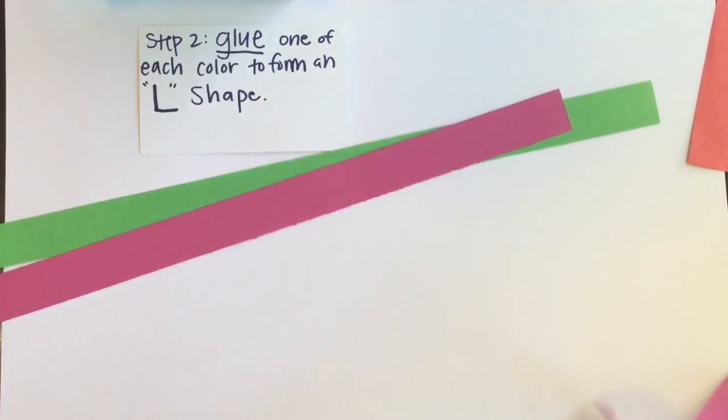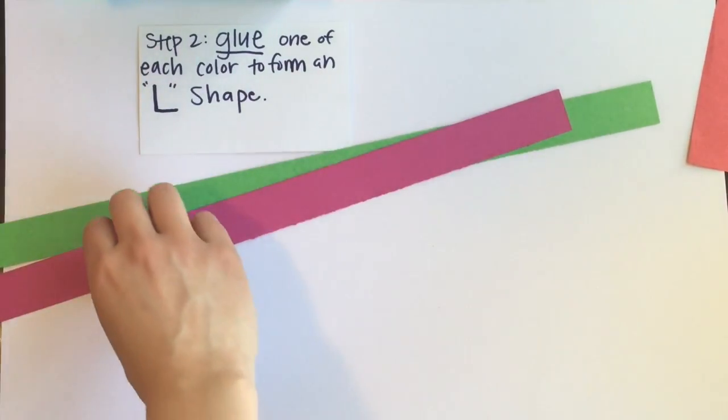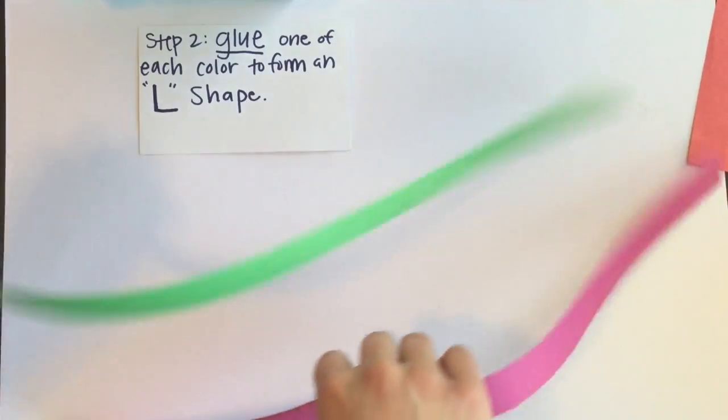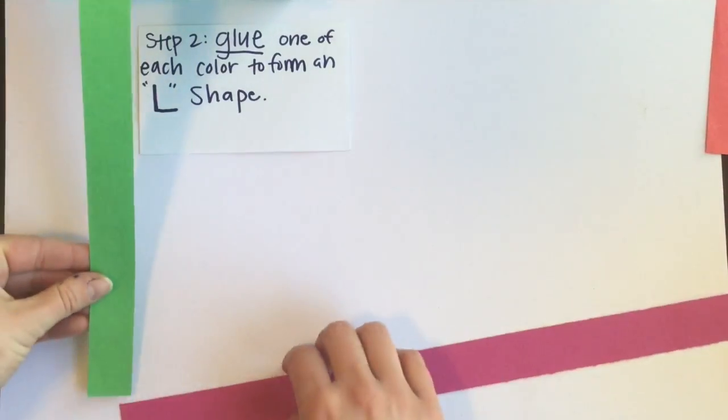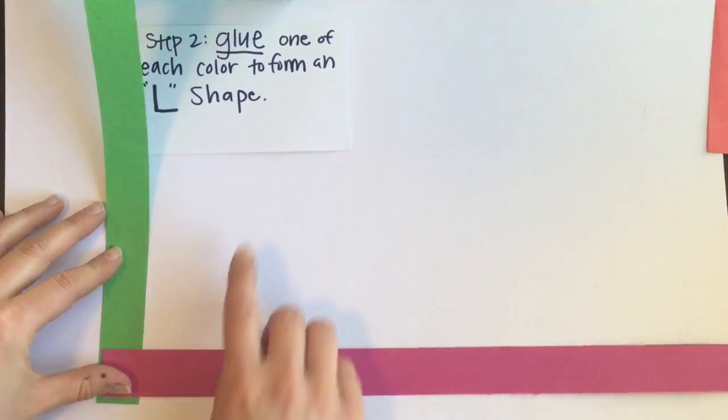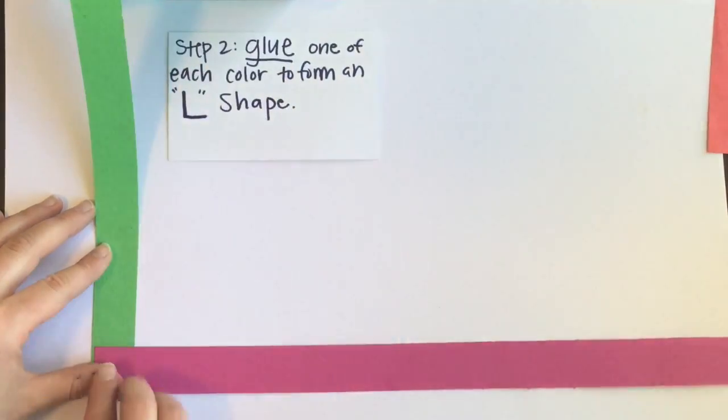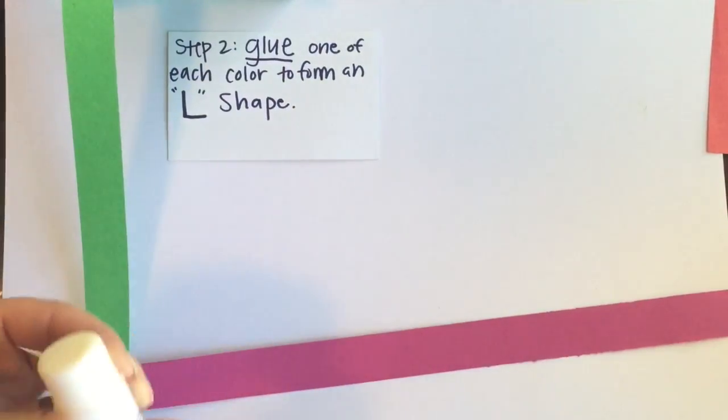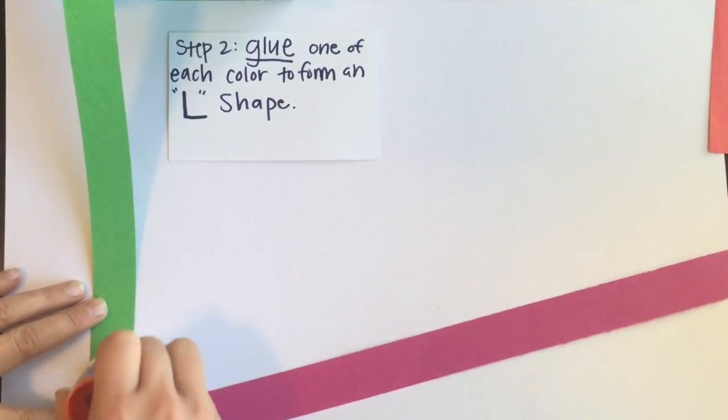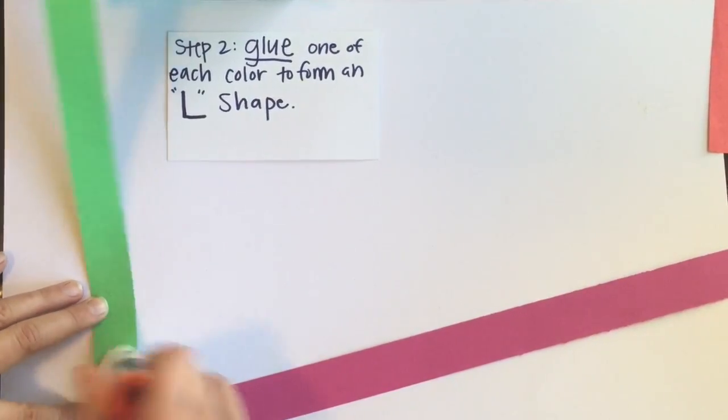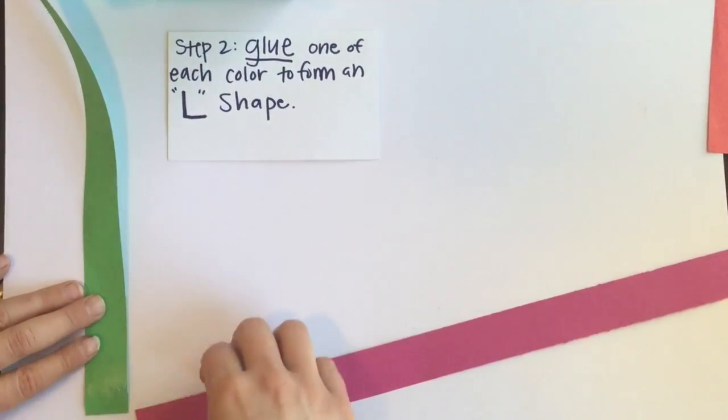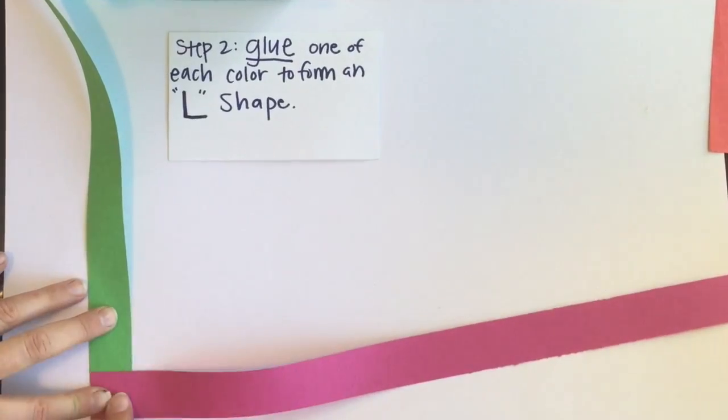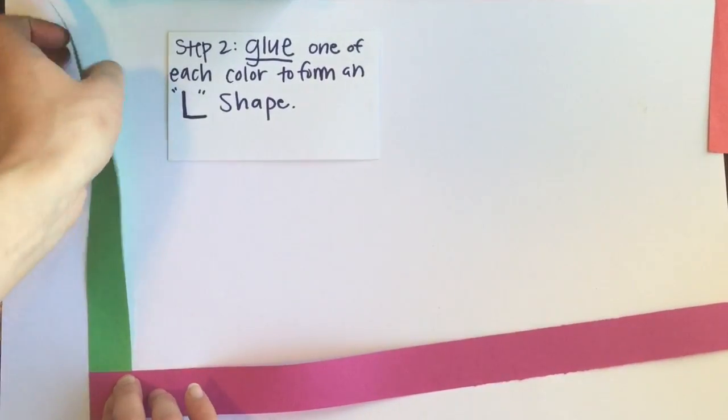I want both different colors and I'm going to lay them out to form an L shape and then I need to glue them together. So I'm gonna take my glue stick, put some glue just on the end and hold to make sure it sticks.